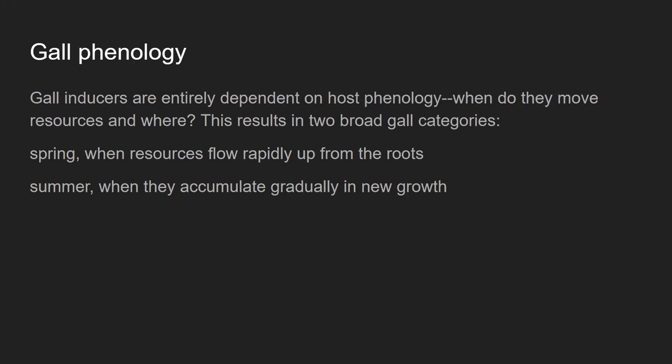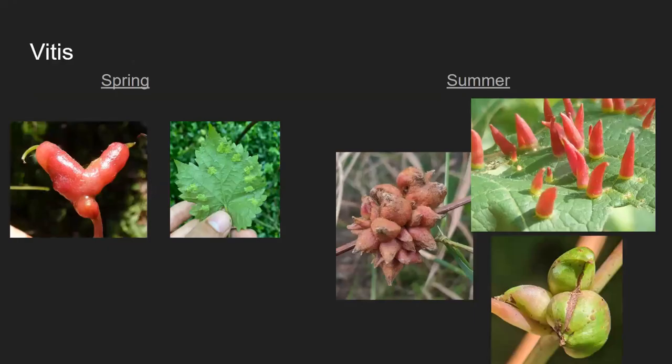One strategy is to be there in the spring when all of the stored resources are coming up out of the roots. The other is to gradually grow the gall over the course of the growing season in new tissue after its initial growth period. Let's look at the distinction we can see on two different sets of hosts.